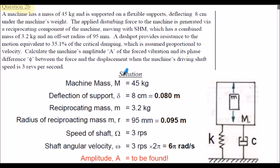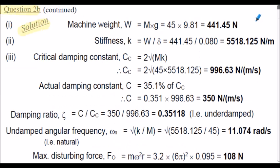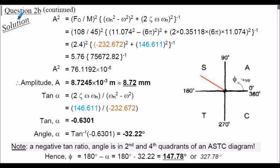Question 2b, beginning of the solution. I'll let you review the solution at your own pace, just extracting information from the question. To be careful in this question, the speed of the offset mass is actually 3 revolutions per second, so use the appropriate conversion in this case. We have to calculate the damping ratio zeta in this instance. Also, we can calculate the disturbing force F0 because we have all the information this time. Using our A squared formula from our previous derivation, we can calculate the amplitude, approximately 8.72 millimetres, and we can calculate the phase angle phi, approximately 148 degrees. Angle phi is shown at this orientation on our ASTC diagram.